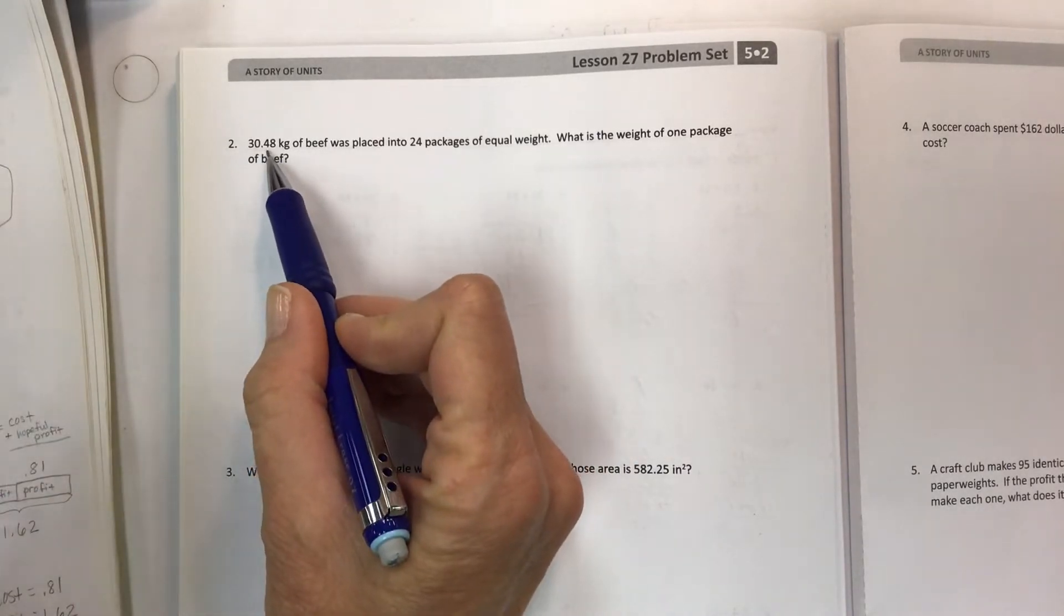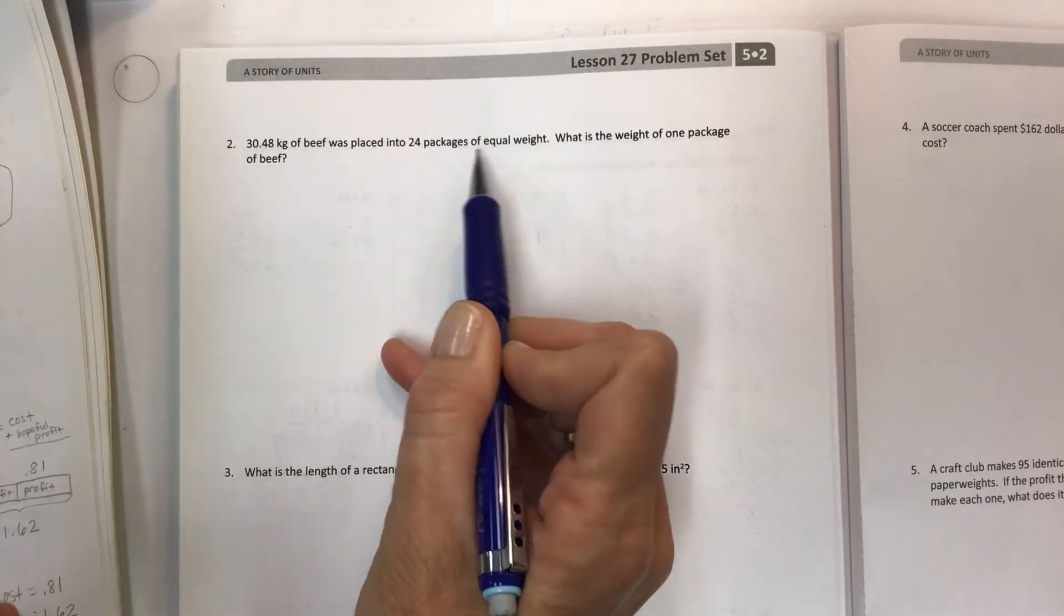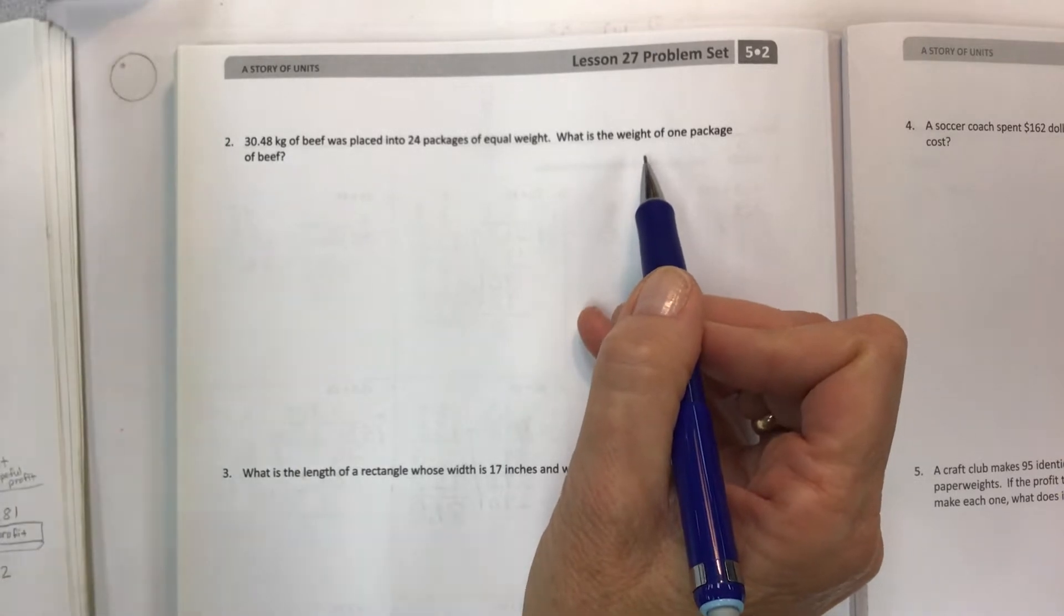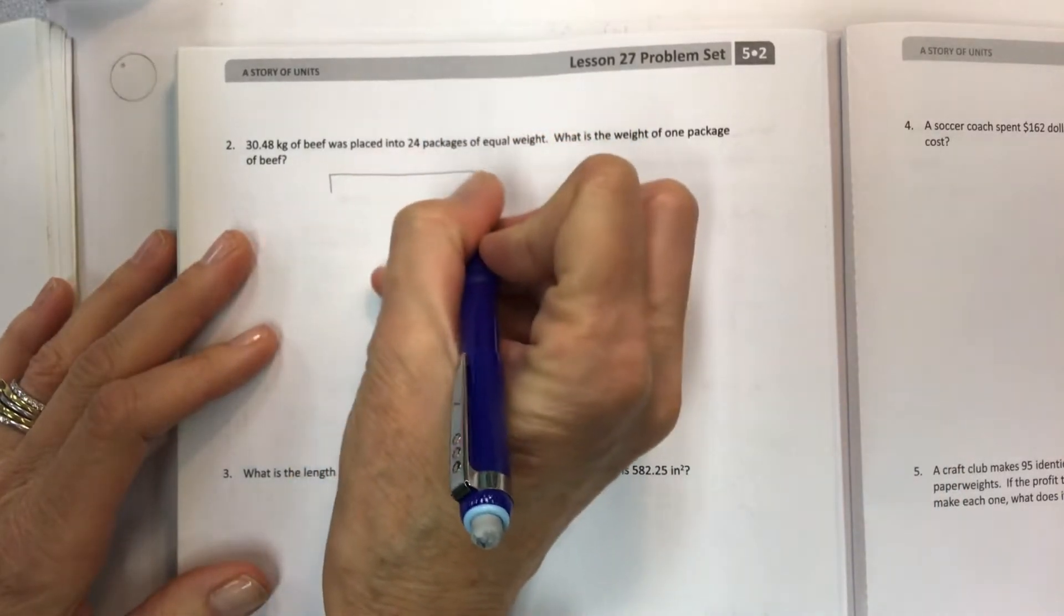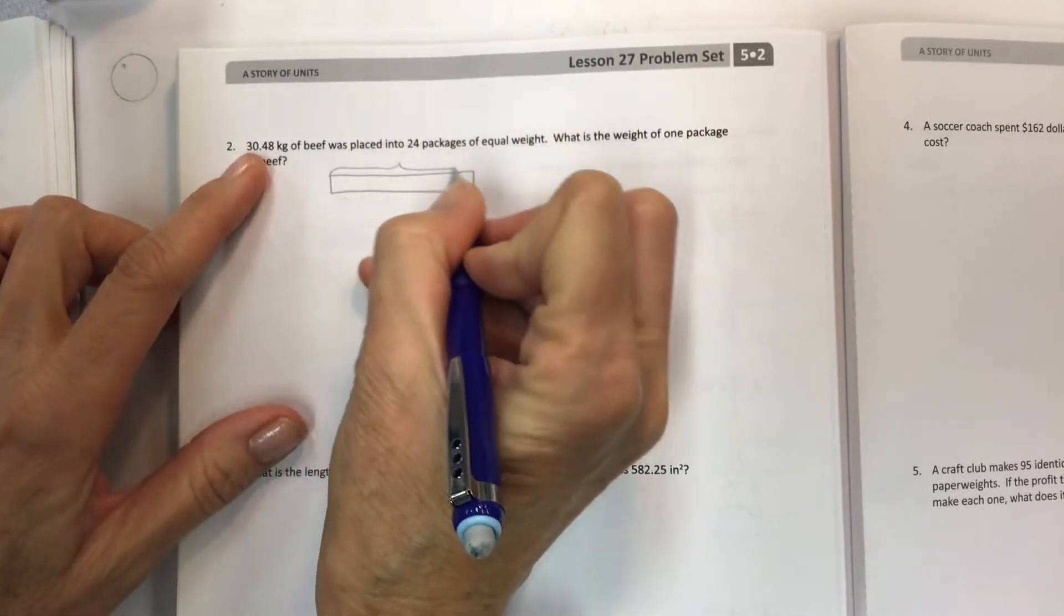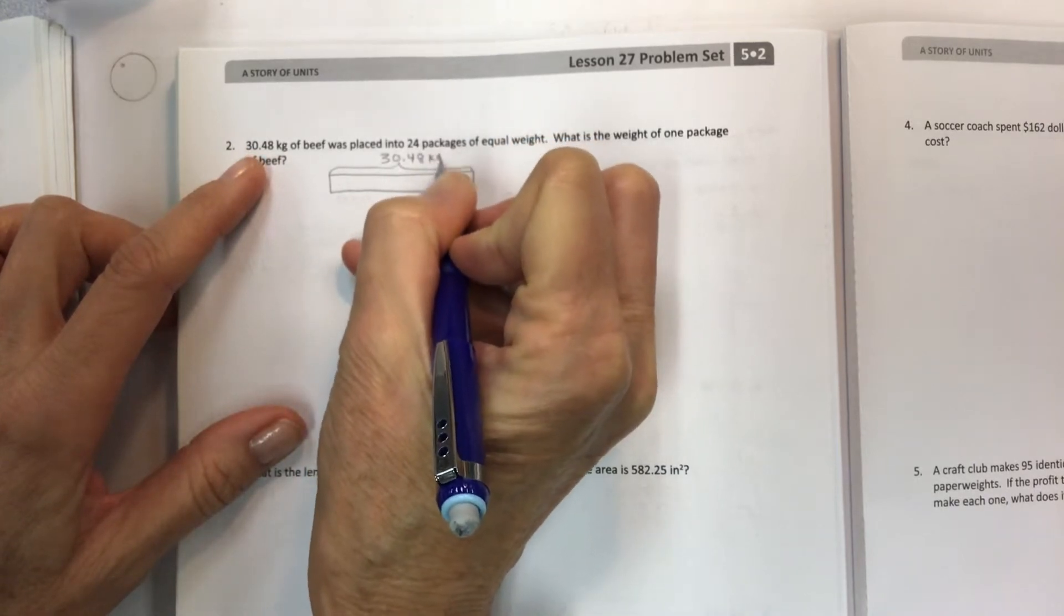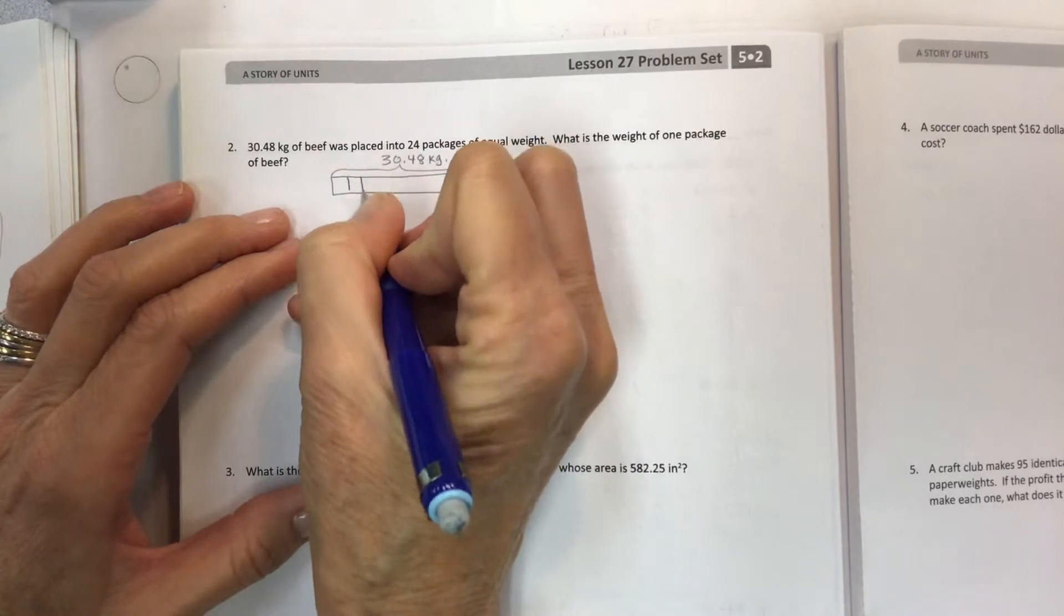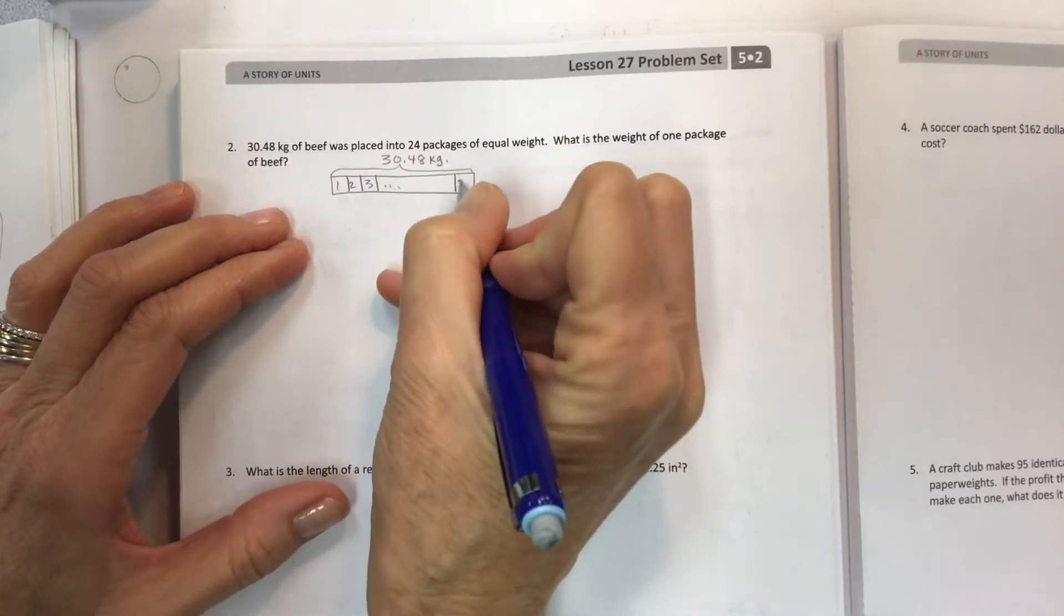30 and 48 hundredths kilograms of beef was placed into 24 packages of equal weight. What is the weight of one package of beef? As always, you want to think about what is being shared. The whole thing, the 30 and 48 hundredths kilograms, is being shared into 24 packages. One, two, three, dot dot dot, up to 24.